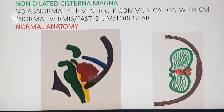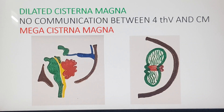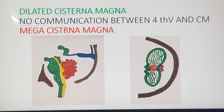This is how a mid-sagittal view and an axial view would look in a fetus whose posterior fossa is normal. Now we have a dilated cisterna magna — look at the diameter of the fluid space posterior to the cerebellum, it is more than 10 mm. But there is no communication between the yellow fourth ventricle and the dilated cisterna magna. The vermis, fastidium and tentorium are normal.